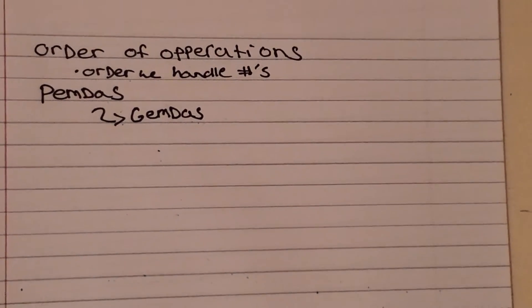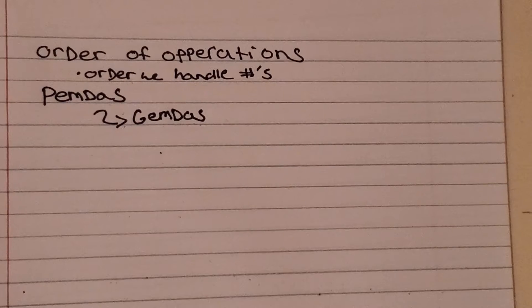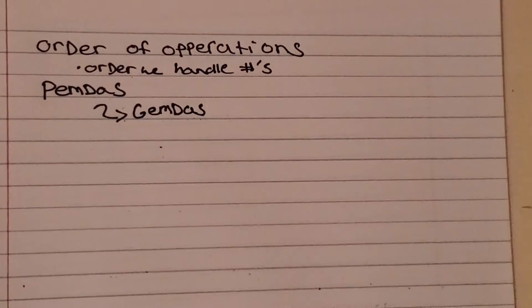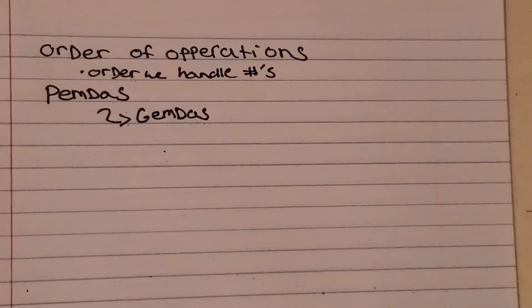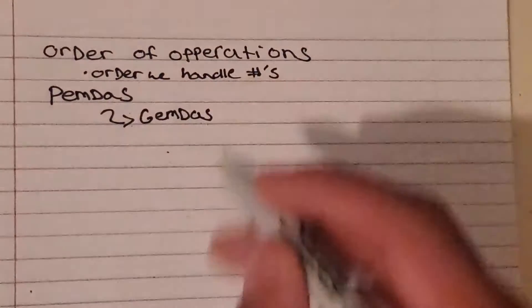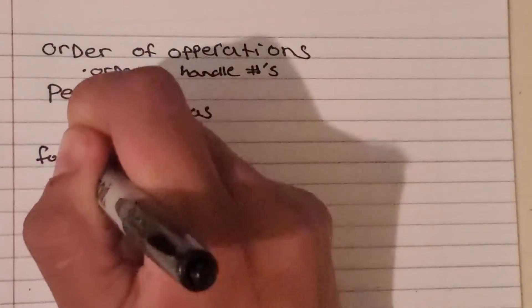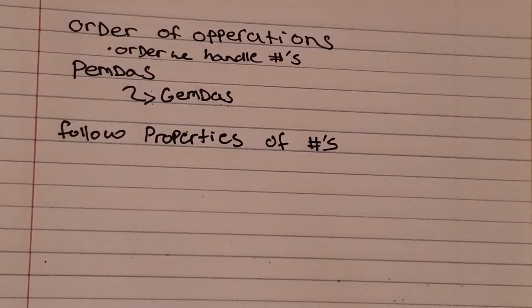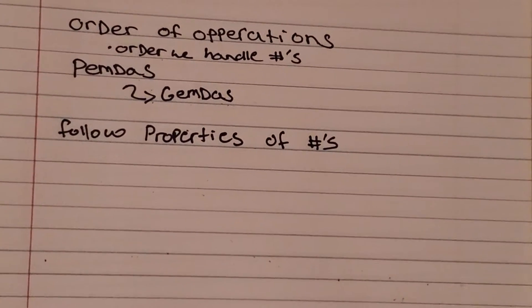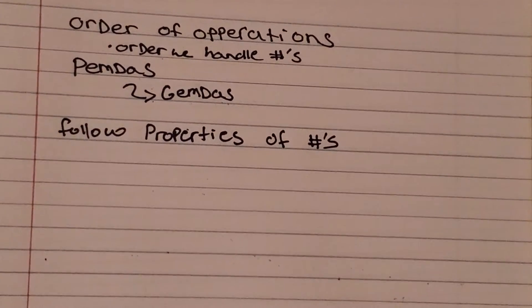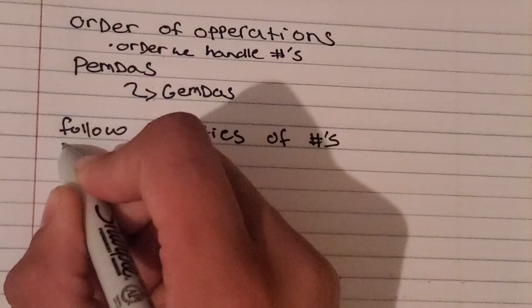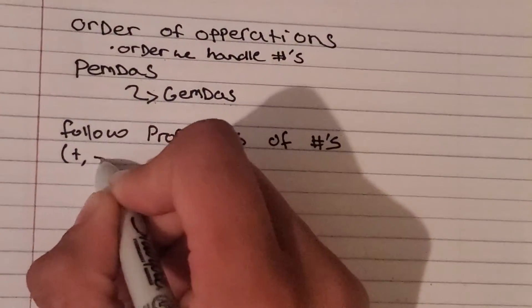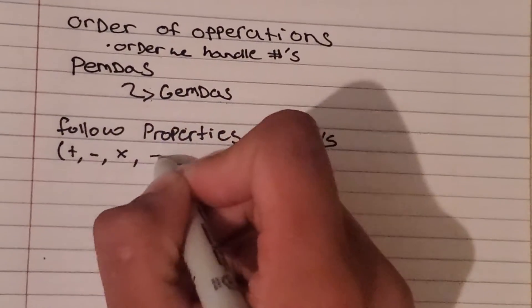As long as you have a grouping symbol, exponents, multiplication, division, addition, subtraction — these ideas follow, and they are what we call arithmetic properties. They only cover the four basic operations: addition, subtraction, multiplication, and division.